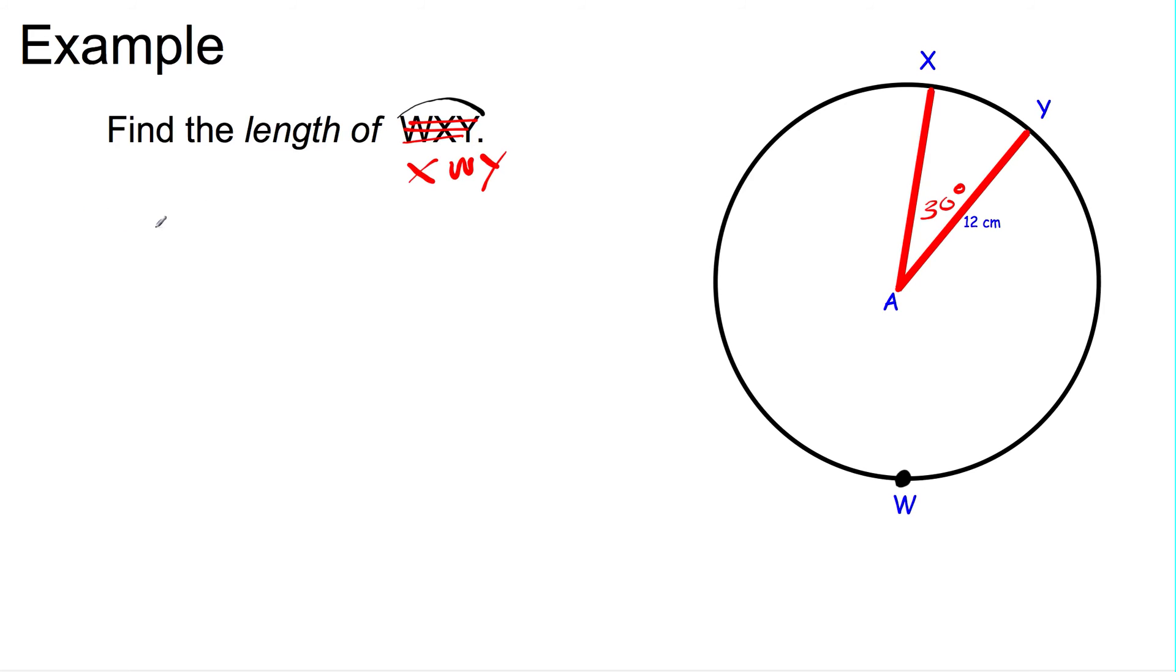To find the length of arc XWY, the length of XWY is equal to the measure of arc XWY over 360 degrees times 2 pi r. Remember, the 2 pi r is the circumference of the whole circle. And over here, we have the ratio of the part to the whole. That's how we figure out the part of the circle we're trying to find. This is the arc length theorem.